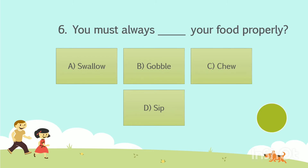Question number 6. You must always dash your food properly. Option A: Swallow. Option B: Gobble. Option C: Chew. Option D: Sip. Your time starts now. The answer is Option C, Chew.